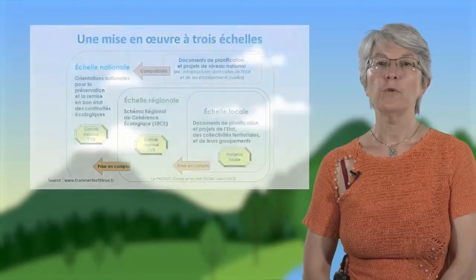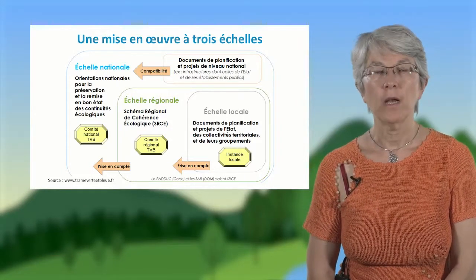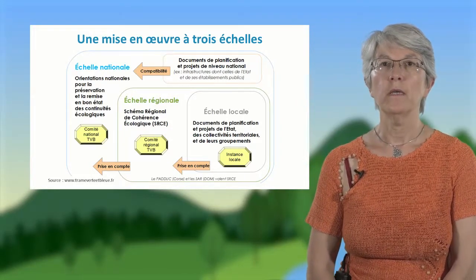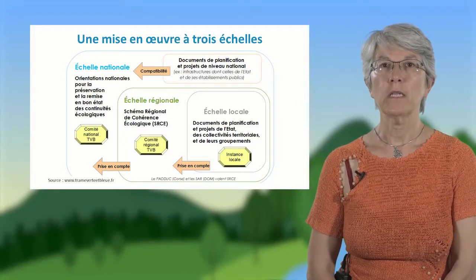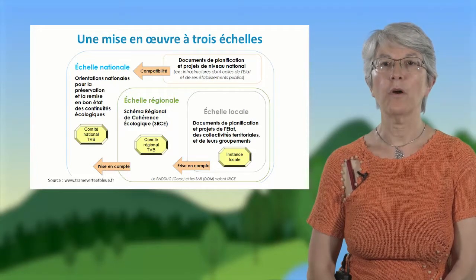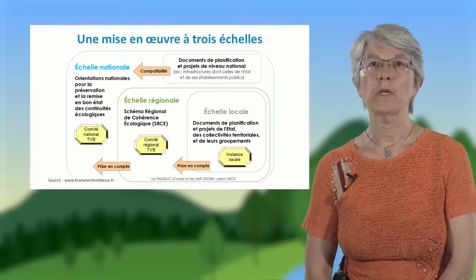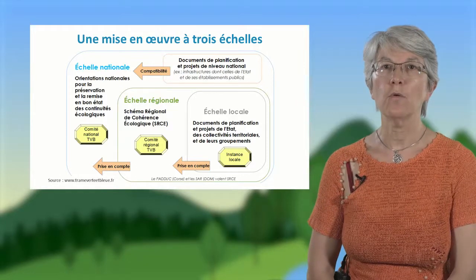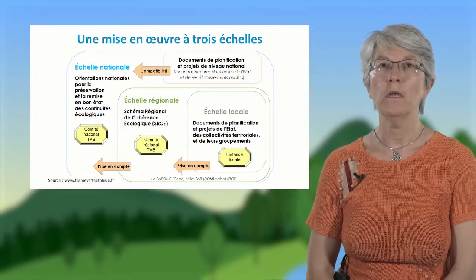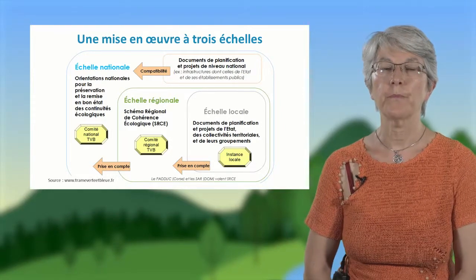La trame verte et bleue se met en œuvre à trois échelles. À l'échelle nationale, avec les orientations nationales qui définissent les critères généraux que doivent respecter les documents de rang inférieur, et qui doivent être respectés par les documents de planification ou les grandes infrastructures de l'État, comme les autoroutes ou les voies ferrées à grande vitesse.